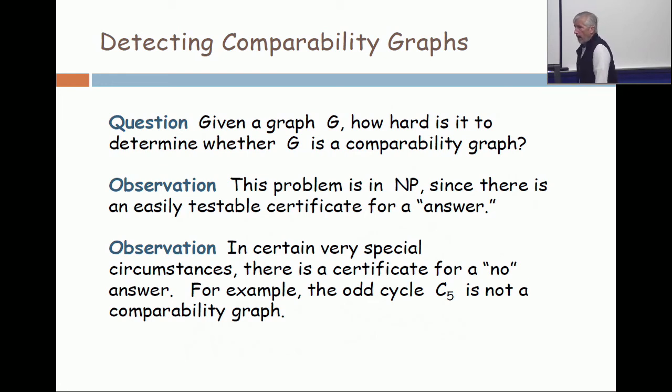We start with the observation that just like cover graphs, the question is in NP, because for a yes answer, there's an easily testable certificate. Oh, I see a typo. In the observation in the middle, it's not that there's a certificate for an answer, there's a certificate for a yes answer.